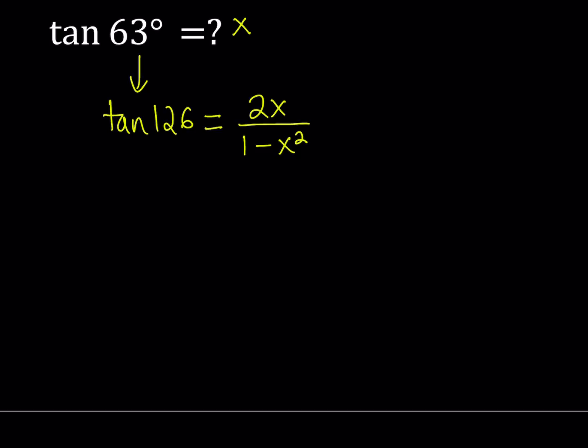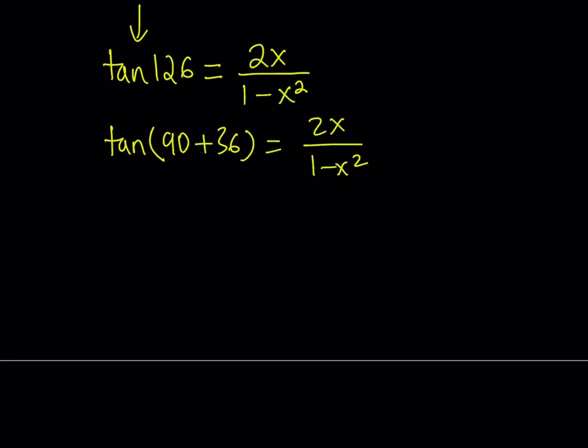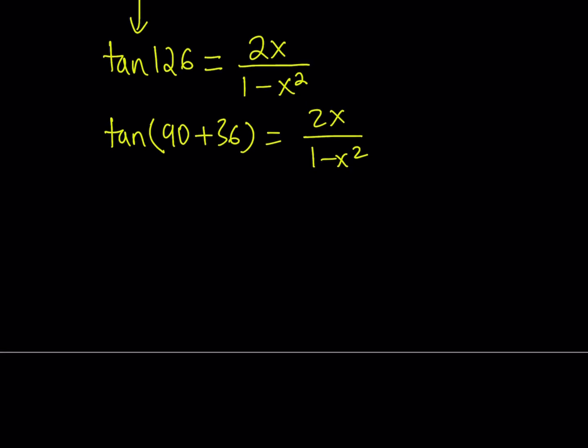And notice that 126 can be written as 90 plus 36. Okay, great. Now, this allows us to actually consider something. 126 is an obtuse angle, but 36 is an acute angle, which is less than 90 degrees. So, considering the fact that tangent 90 plus α can be written as negative cotangent α. Because you have an angle in the first quadrant, you add 90 to it. That's going to switch the values of tangent and cotangent. It's also going to make it negative because in the second quadrant, tangent and cotangent are both negative. But in this case, we're looking at tangent, of course.